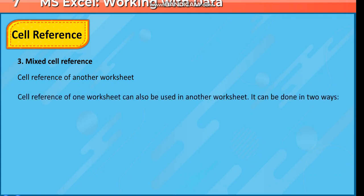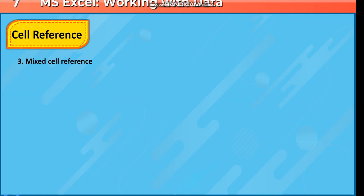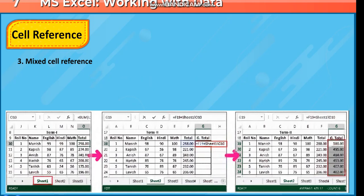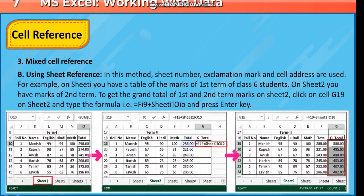Cell reference of another worksheet: A cell reference from one worksheet can also be used in another worksheet. It can be done in two ways. A) Using copy-paste: Select and copy the formula or function of a cell in a worksheet and paste it in another worksheet. B) Using sheet reference: In this method, the sheet number, exclamation mark, and cell address are used.